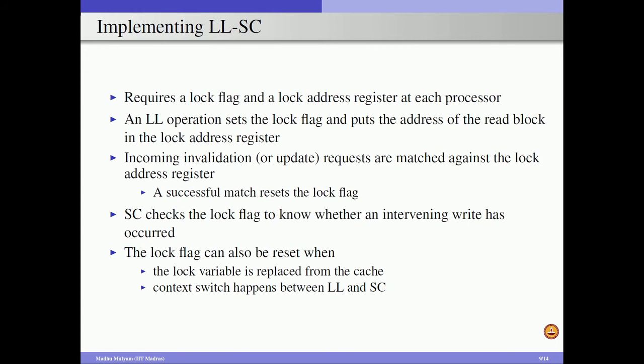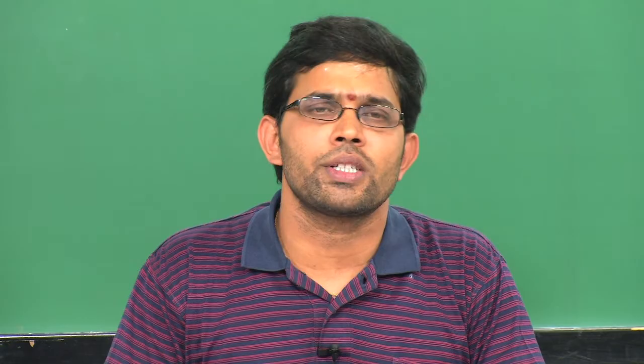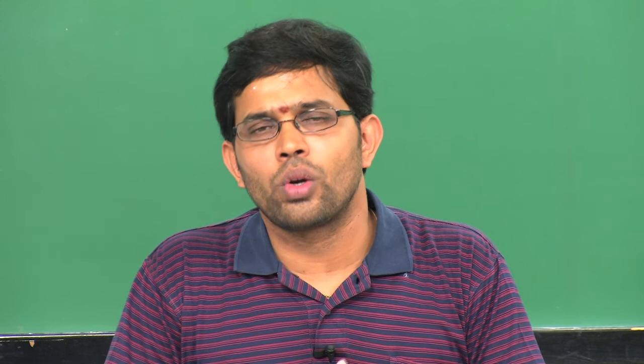Now we consider the other synchronization type: event synchronization. Event synchronization can happen on a point-to-point basis or on a global sense. For point-to-point event synchronization we use flag bits, and for global synchronization we use barriers. Point-to-point event synchronization can be implemented by software algorithms mainly classified into two groups: busy waiting and blocking.